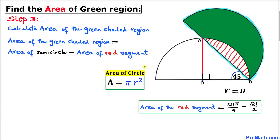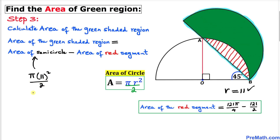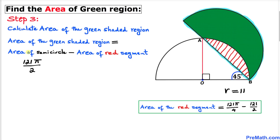Now let's recall the area of a circle formula: area equals pi r squared. Since we are dealing with a semicircle, we are going to divide by two. So the area of the semicircle is pi r squared divided by two. Therefore, with radius 11, the area of this semicircle is 121 pi divided by 2.